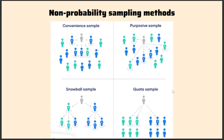Now these are the non-probability sampling methods. First is convenience sampling — the researcher picks up samples that are very convenient to obtain or very convenient for the research, represented graphically as those samples that are very near to the researcher. Then you have purposive sampling — there is a specific purpose for every research study, so the researcher will choose only those samples that are very effective, useful, and have a purpose for the study.